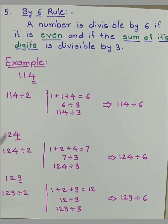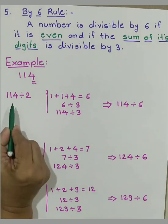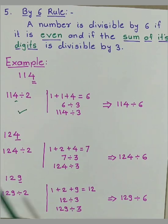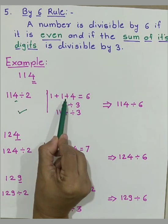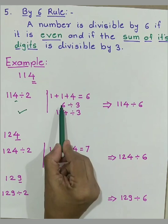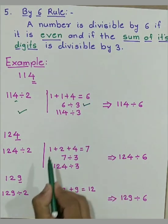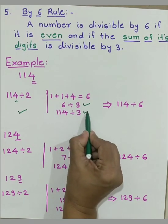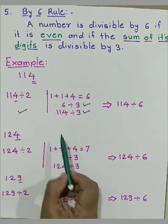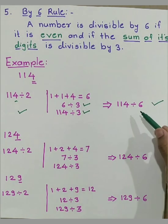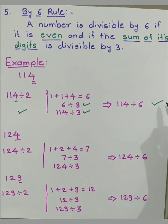114. First we will check the rule of 2. As it is an even number, it can be divided by 2. Now let's check the sum of digits. That is 6. 6 can be divided by 3. Hence, 114 can be divided by 3. As both the tests are passed, we can say 114 can be divided by 6.